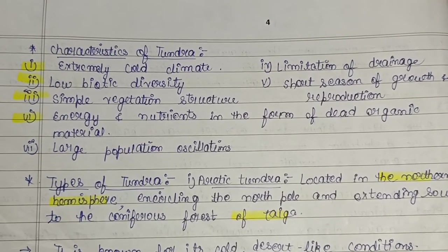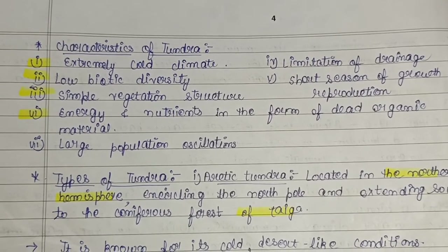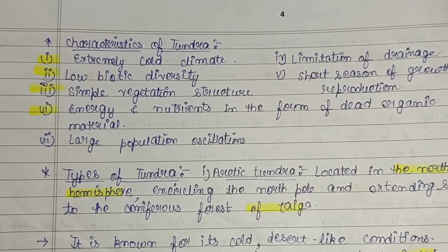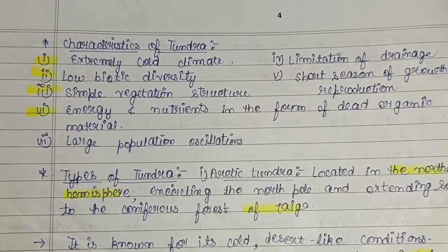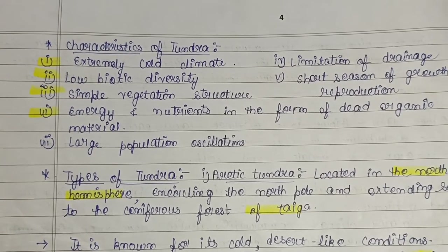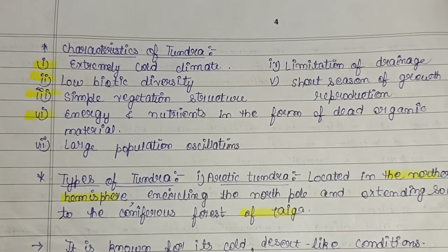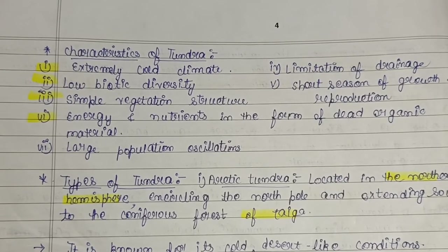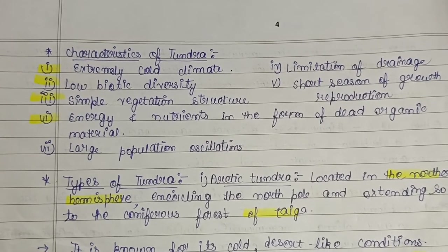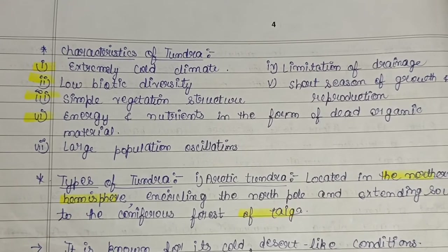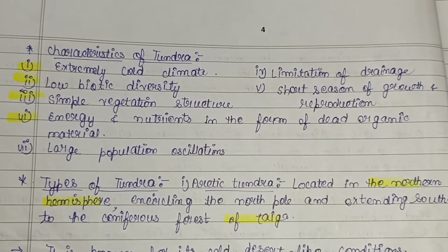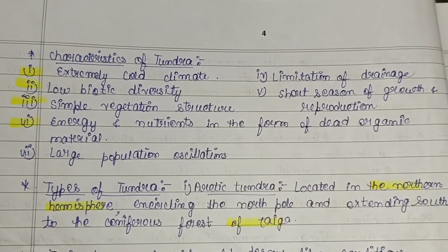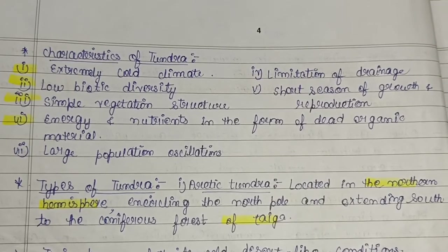Further characteristics include simple vegetation structure — not much diversified trees — energy and nutrients in the form of dead organic materials only, large population oscillations, limitation of drainage, and a short season of growth and reproduction. Growth and reproduction occur only during summer for a short time.